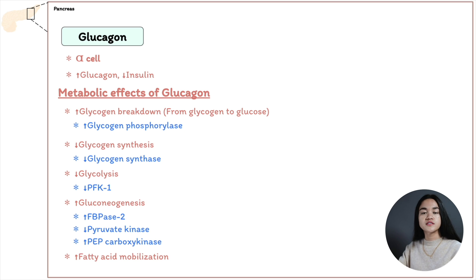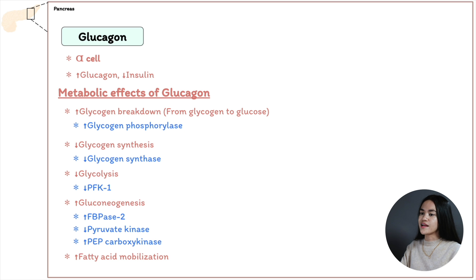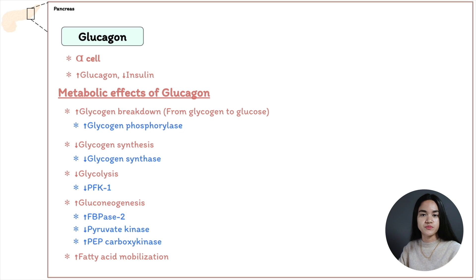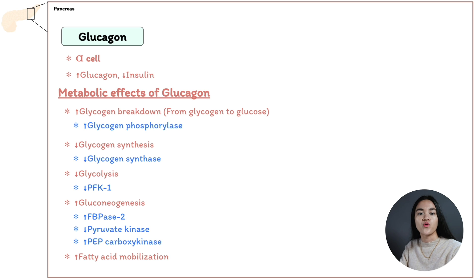This releases fatty acids, which are transported to the liver and other extrahepatic tissues for energy production. Glucagon therefore stimulates fatty acid oxidation in adipose tissue and activates hormone-sensitive lipase.